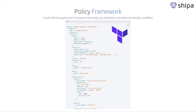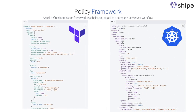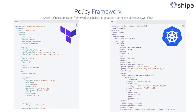Now, let's say you use Crossplane and want to have your policies defined and enforced. Let's look at the definition. You can quickly compare and see they're exactly the same, which gives you the freedom to move between different infrastructure as code tools, but keep consistency when it comes to application policies and governance.